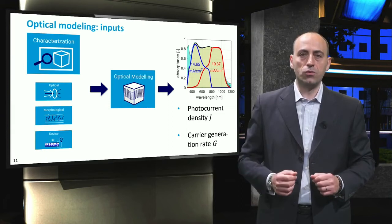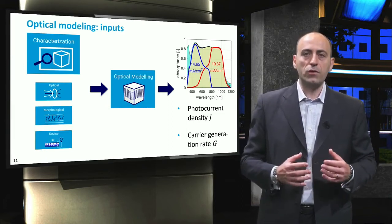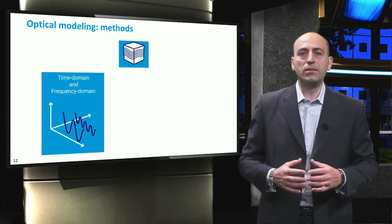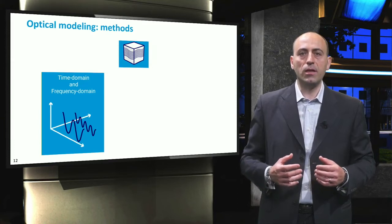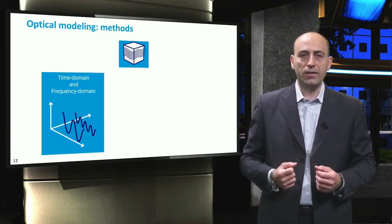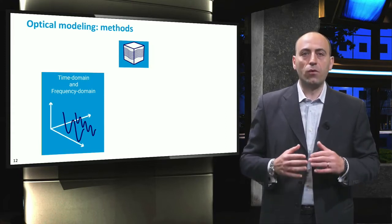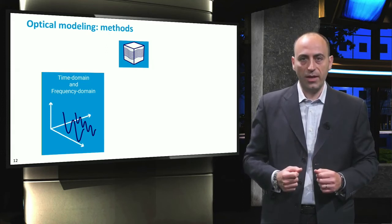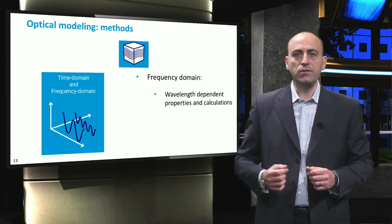Several methods are available to model the optical performance of photovoltaic devices. First, they can be divided by the domain in which equations are solved. In frequency domain approaches, the material optical properties are defined as a function of the frequency of light, hence as function of wavelength. Equations are then solved for every wavelength in the specified range, and at every point in the defined structure.